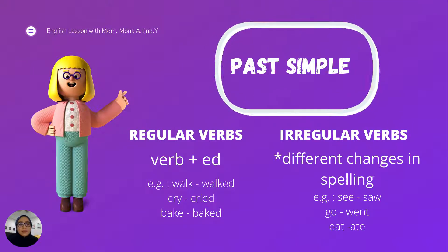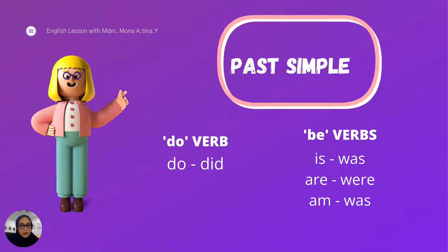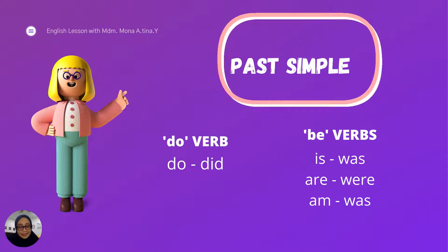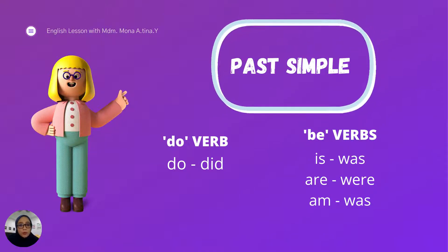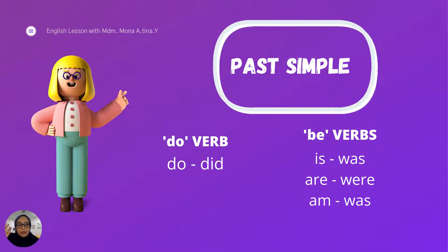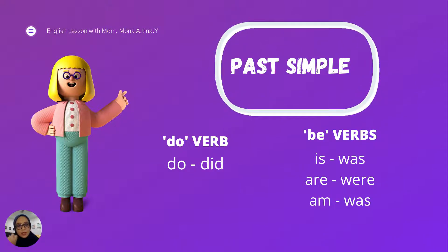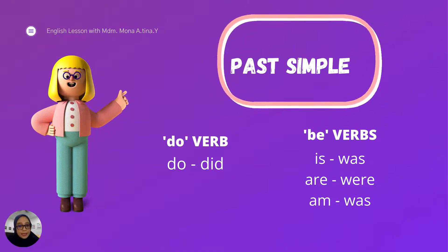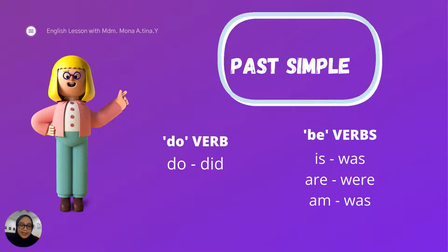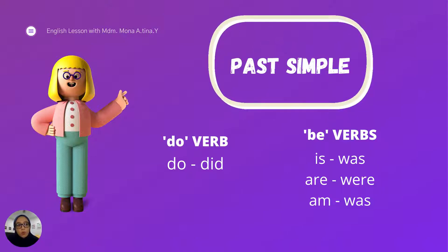I also would like you to pay attention on the DO verb. The DO verb is always written as did, regardless if it is singular or plural - we use the same form. And for BE verbs, we still have to consider it: is becomes was, the BE verb are becomes were, and am becomes was.